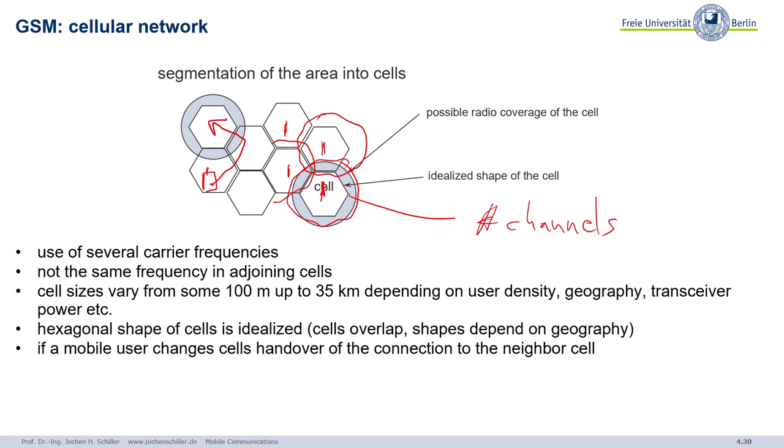What happens if these cells do not belong to the same BSC? Or what happens if those cells do not belong to the same network operator? Then we call it roaming. Roaming is actually the handover into a cell that does not belong to the same operator — either national roaming or international roaming.